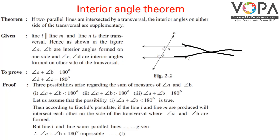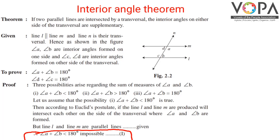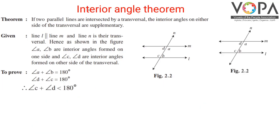They would intersect on the side where angle A and angle B are formed. But line L and line M are given to be parallel lines. Therefore, angle A plus angle B less than 180 degrees is impossible, so the first possibility is ruled out.